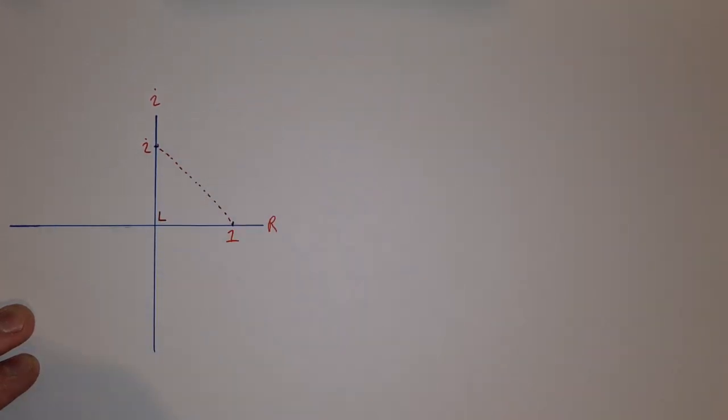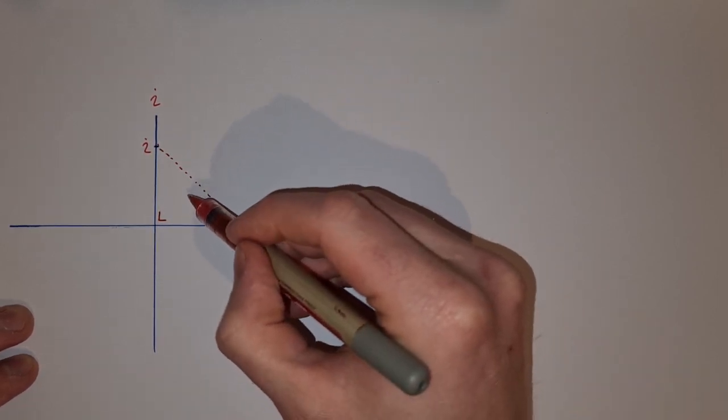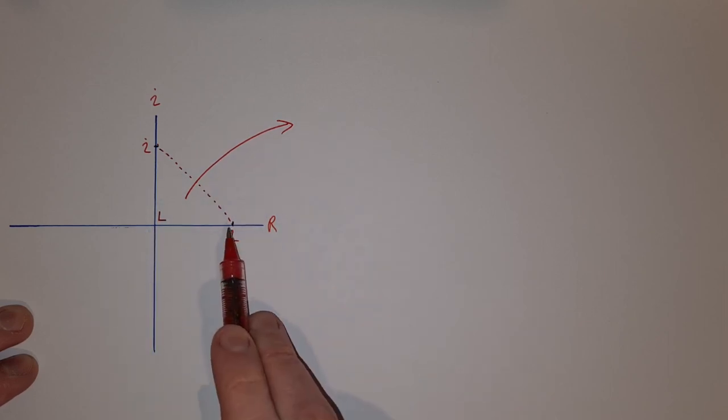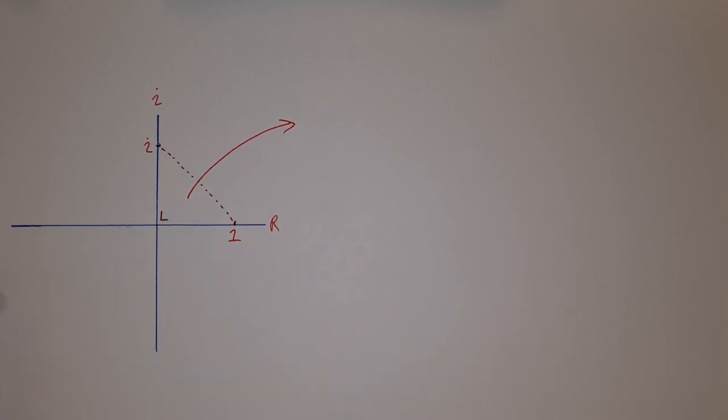What I get is a nice right angle triangle, so I'm going to try and solve this right angle triangle to find the distance between one and i.